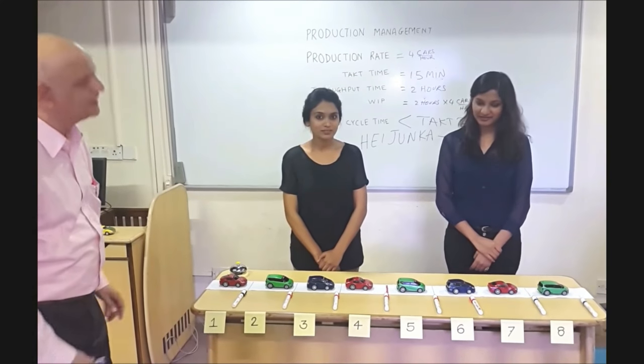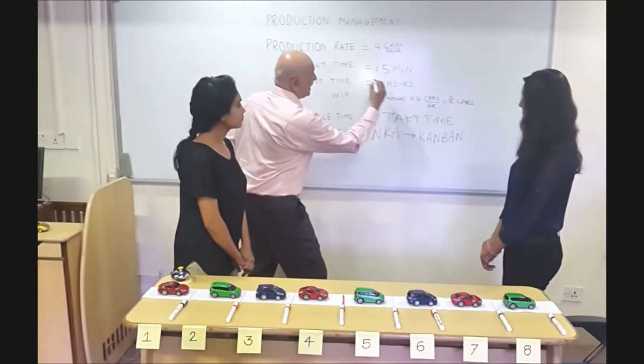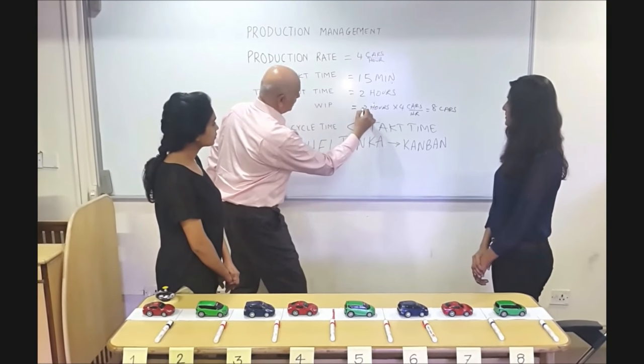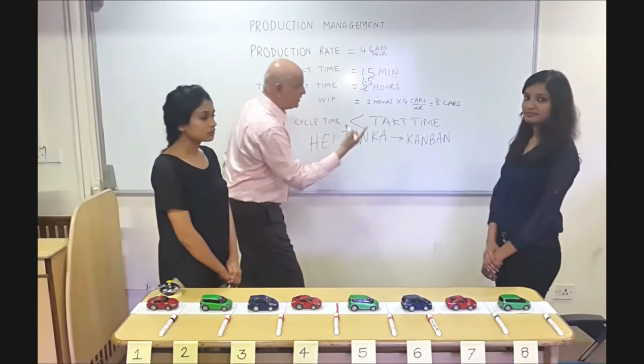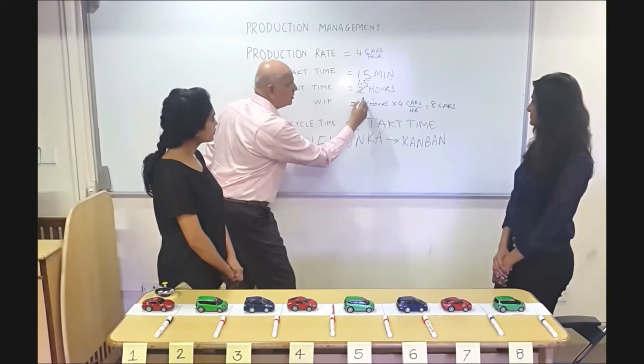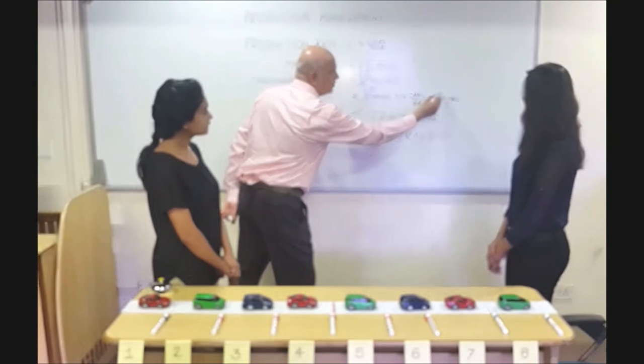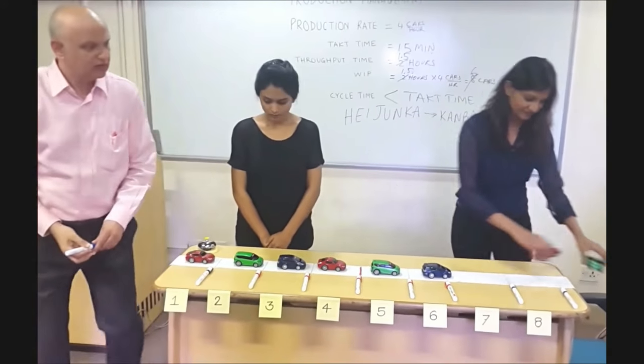So suppose they are successful and the throughput time comes down from two hours to 1.5 hours. Let us see what impact it will have. What will it do? It will reduce the WIP to six cars. Can you demonstrate to us how the conveyor will start looking like?